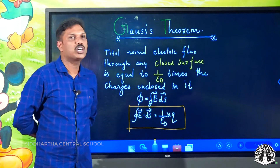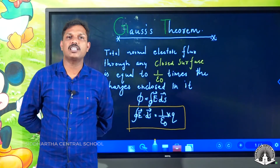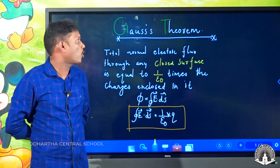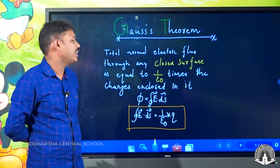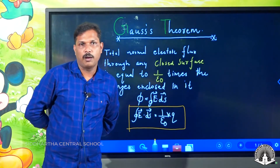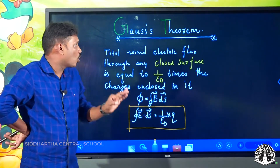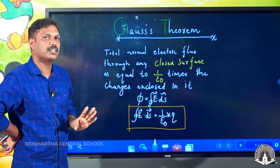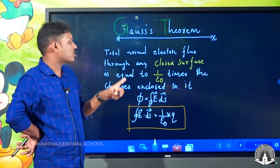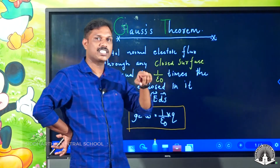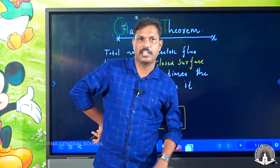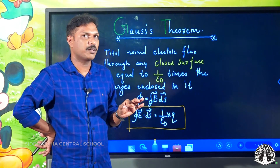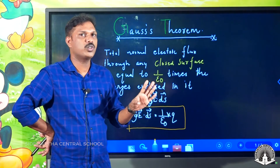Now we will discuss Gauss theorem in electrostatics, because we also study Gauss theorem in magnetism. The Gauss theorem states that the total flux is 1 by epsilon into q.